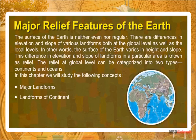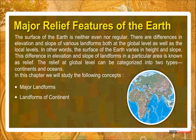The surface of the earth is neither even nor regular. There are differences in elevation and slope of various landforms, both at the global level as well as at the local level. This difference in elevation and slope of landforms in a particular area is known as relief. The relief at the global level can be categorized into two types: continents and oceans.